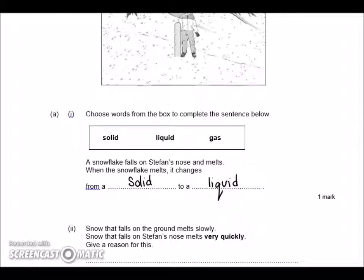The snow that falls on the ground melts quickly, but it melts quicker on his nose because his nose is warmer than the ground.